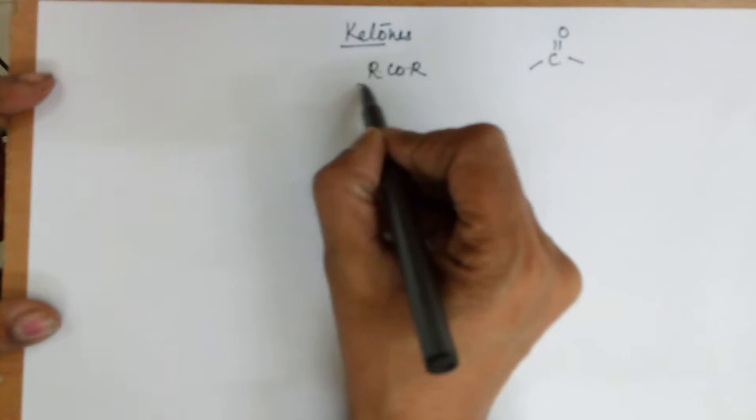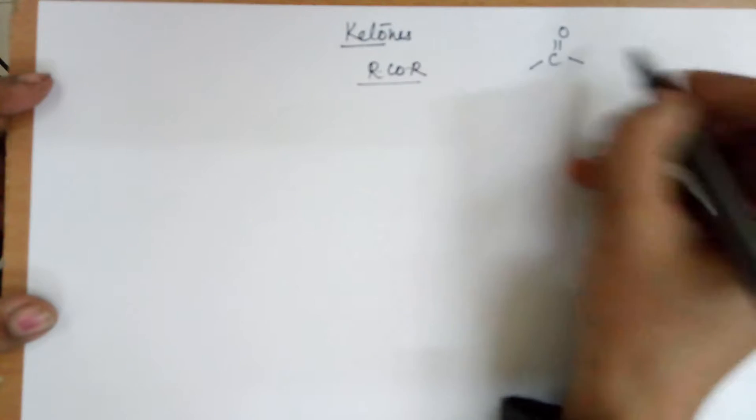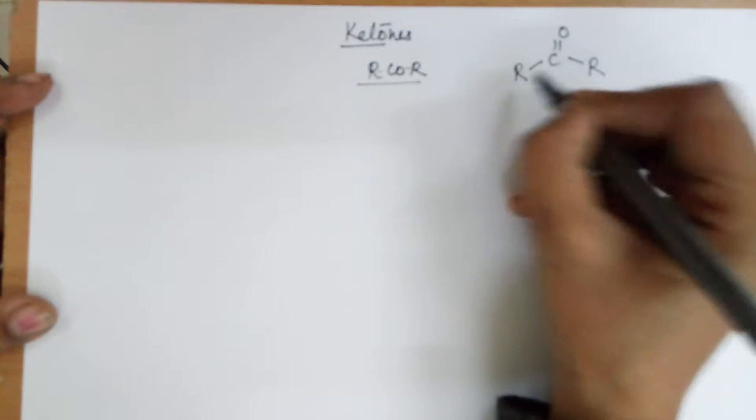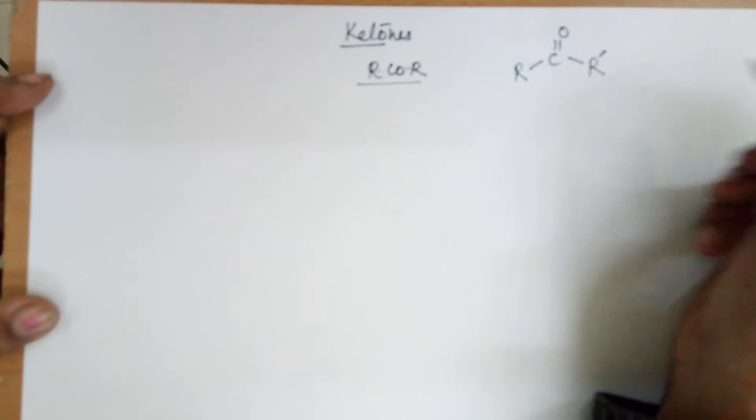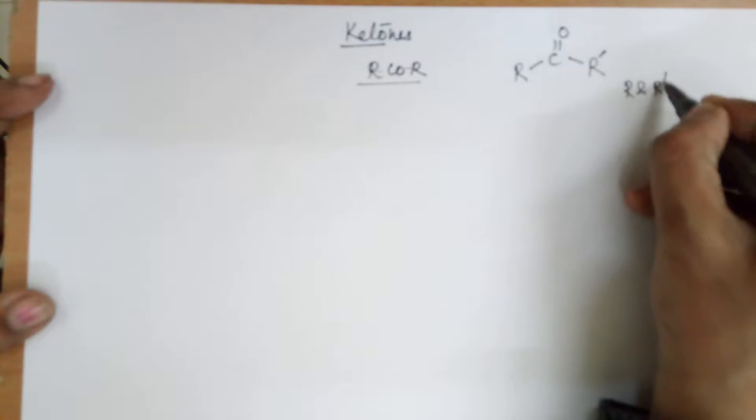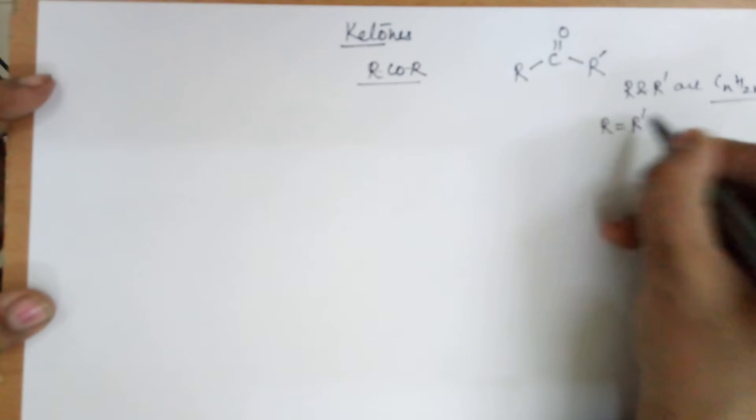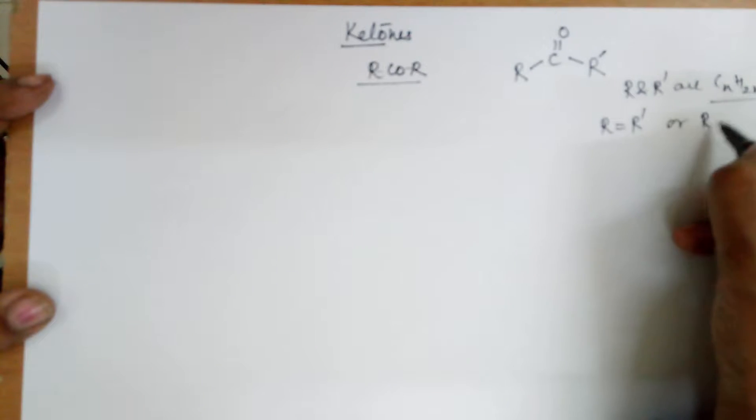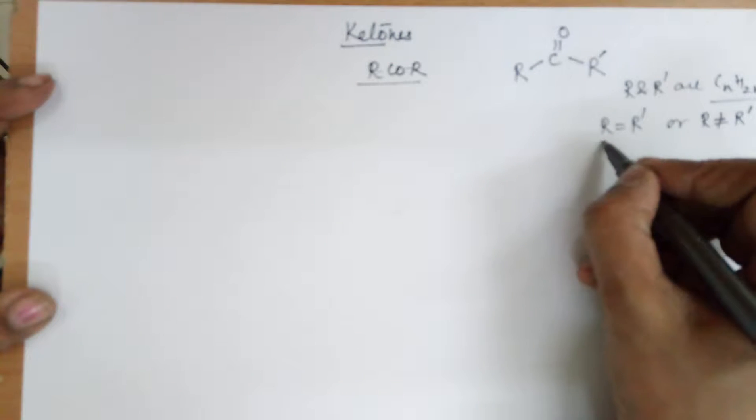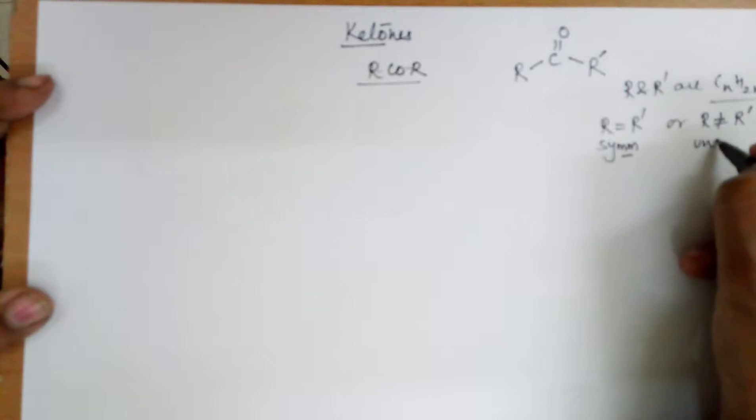A ketone is written with a central carbon as C double bond O and on both sides it should have R groups. The two R groups are carbon chains or alkyl groups, R and R' are CnH2n plus 1 alkyl chains. They may be same or may not be. If they are same it is called a symmetrical ketone and if they are not it is known as unsymmetrical ketone.